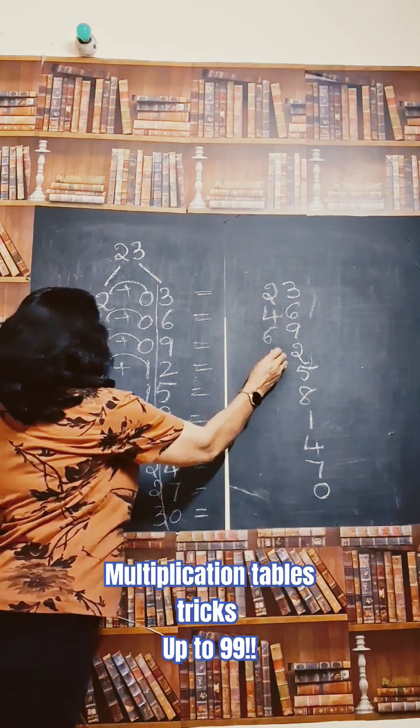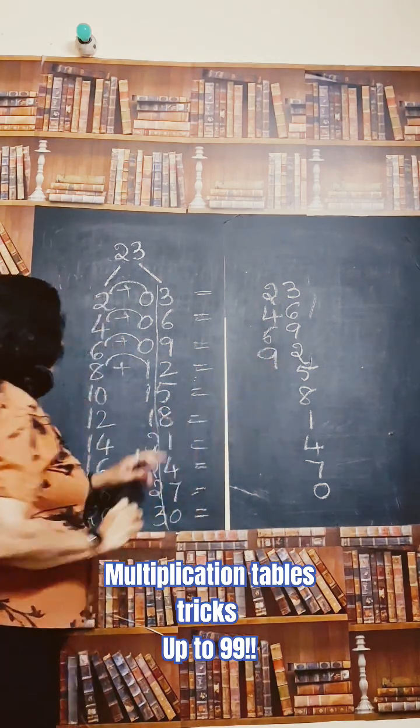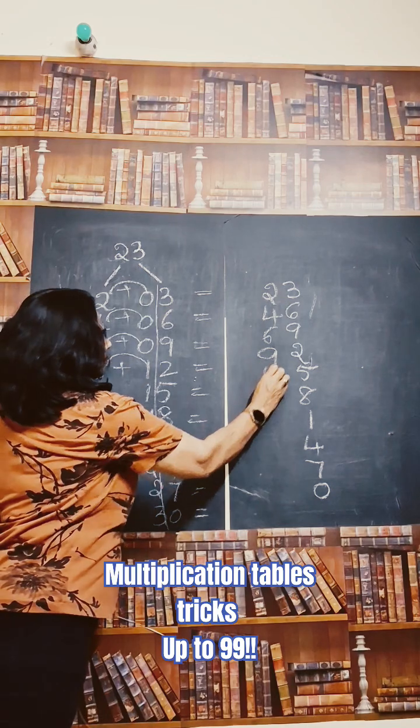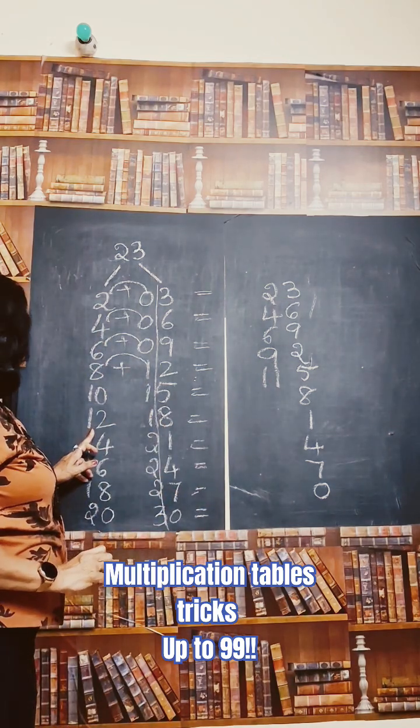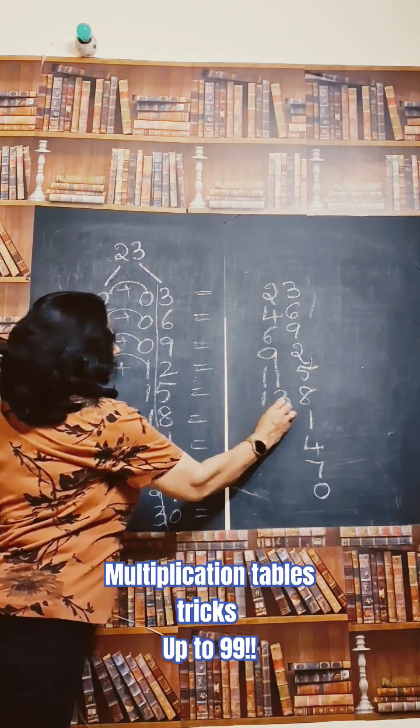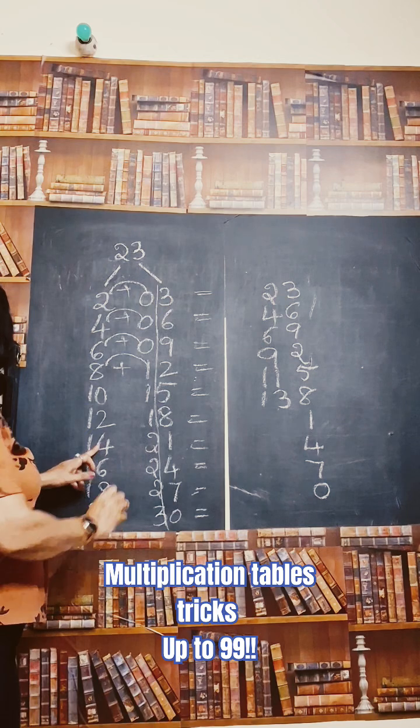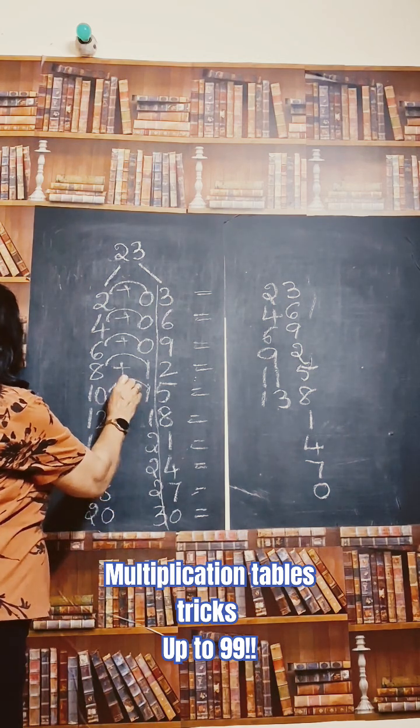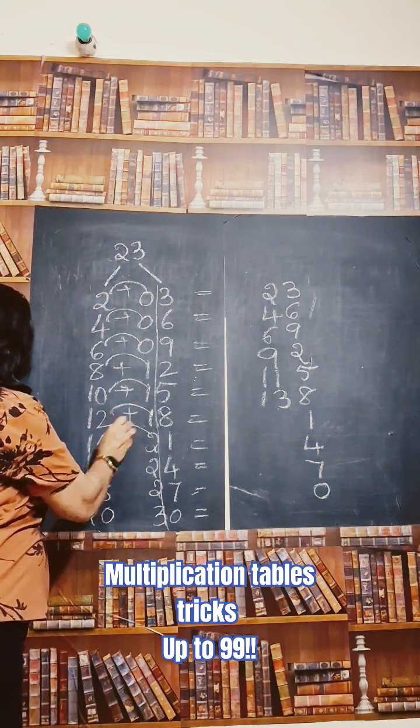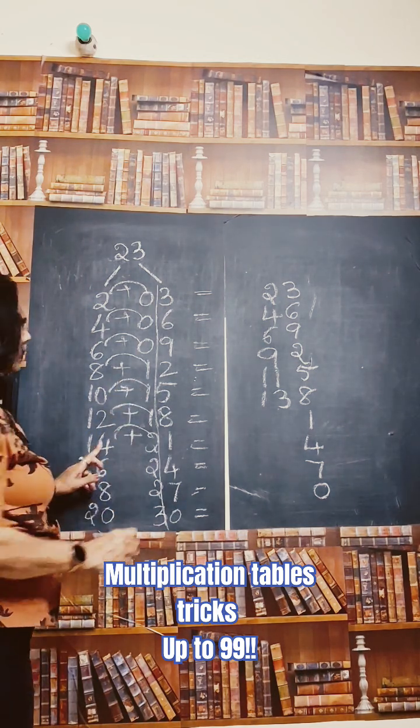1 plus 8, 9. 1 plus 10, 11. 1 plus 12, 13. 2 plus, this one we added, this 2. 2 plus 14, 16.